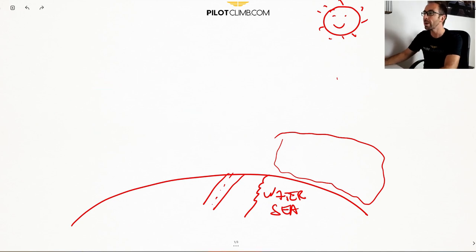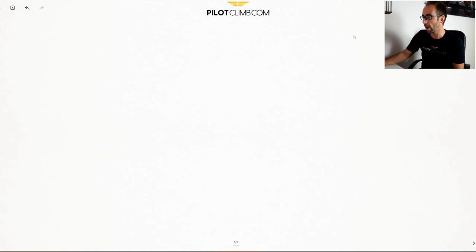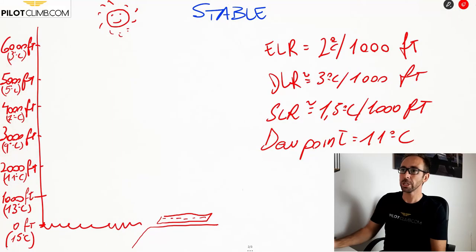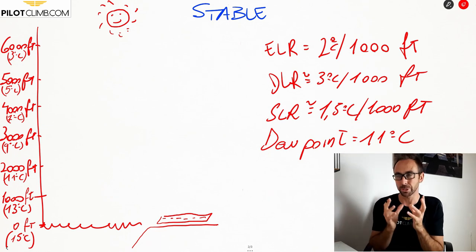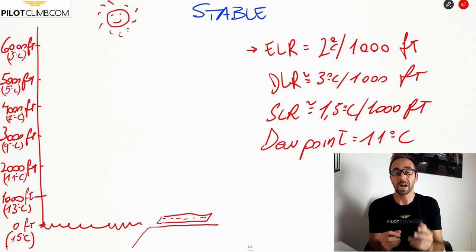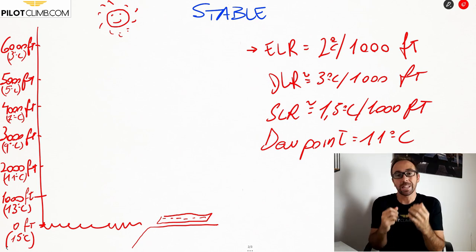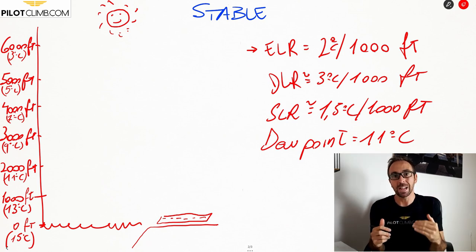Now that this is clear, we can talk about something very important. I've made a separate video about the environmental lapse rate, the dry adiabatic lapse rate, and the saturated adiabatic lapse rate, which I strongly recommend watching. The environmental lapse rate is the change in temperature with altitude. According to the standard atmosphere, the temperature decreases by 2 degrees Celsius every 1,000 feet in elevation. So if at mean sea level the temperature is 15°C, at 1,000 feet it will be 13°C.